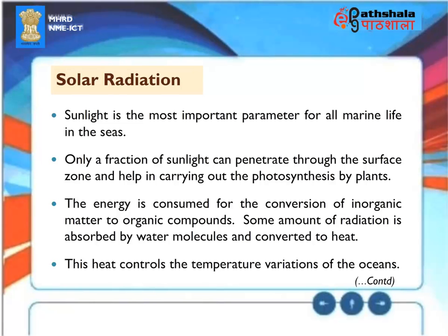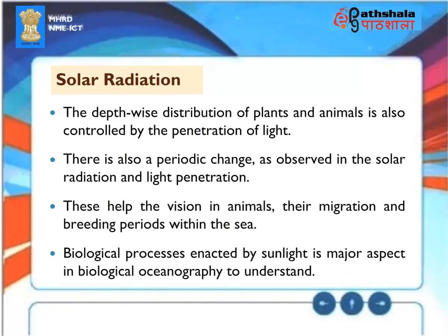Solar Radiation: Sunlight is the most important parameter for all marine life in the seas. Only a fraction of sunlight can penetrate through the surface zone and helps in carrying out photosynthesis by plants. The energy is consumed for the conversion of inorganic matter to organic compounds. Some amount of radiation is absorbed by water molecules and converted to heat, which controls the temperature variations of the oceans. The depth-wise distribution of plants and animals is also controlled by the penetration of light, which also influences vision, migration and breeding periods of animals.